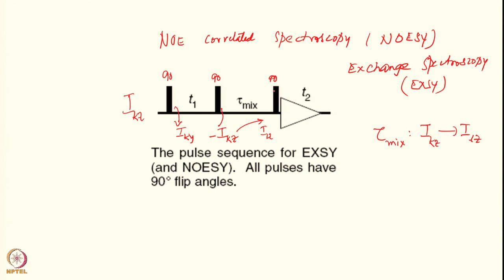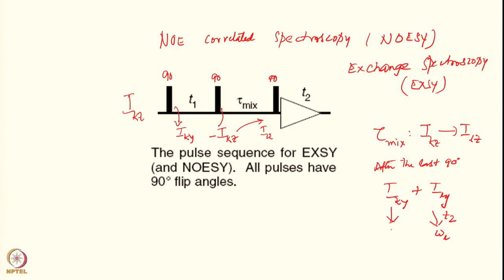When the last 90-degree pulse is applied, both IKZ and ILZ get converted into transverse magnetization, so we get both IKY and ILY. Both transverse magnetization components will be present. ILY evolves in T2 with the characteristic frequency omega L, and IKY evolves with omega K. Therefore, in T1 we have omega K, and in T2 we have a mixture of omega K and omega L, with this transfer having happened through the dipolar interaction or exchange process.